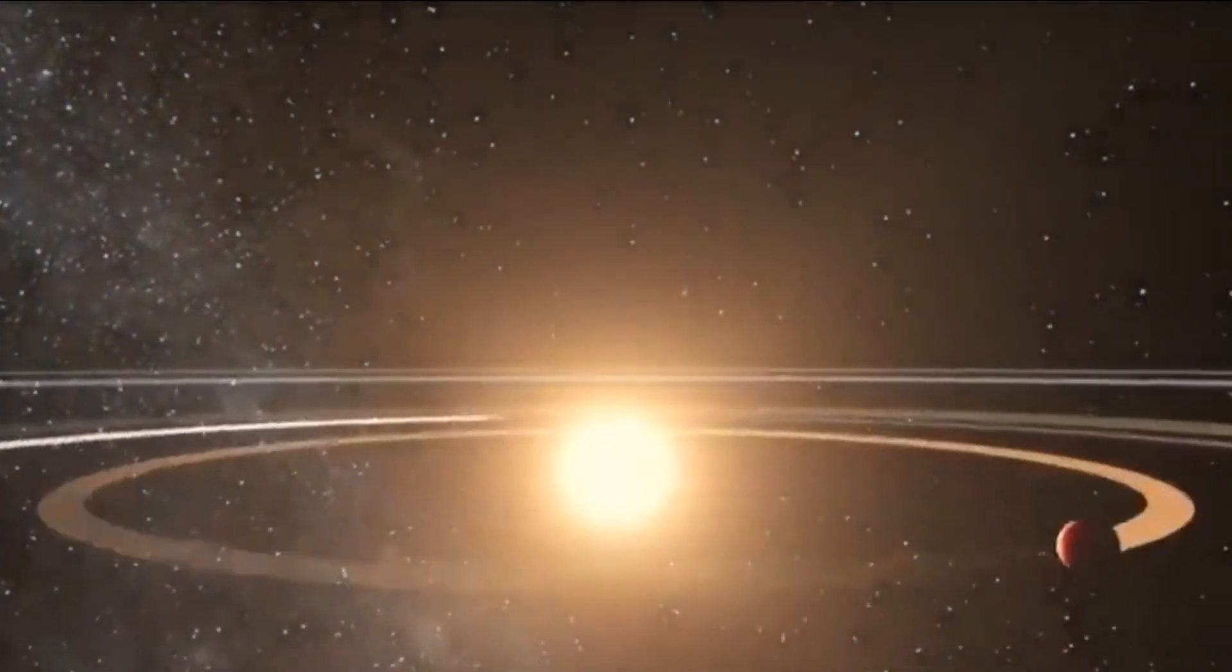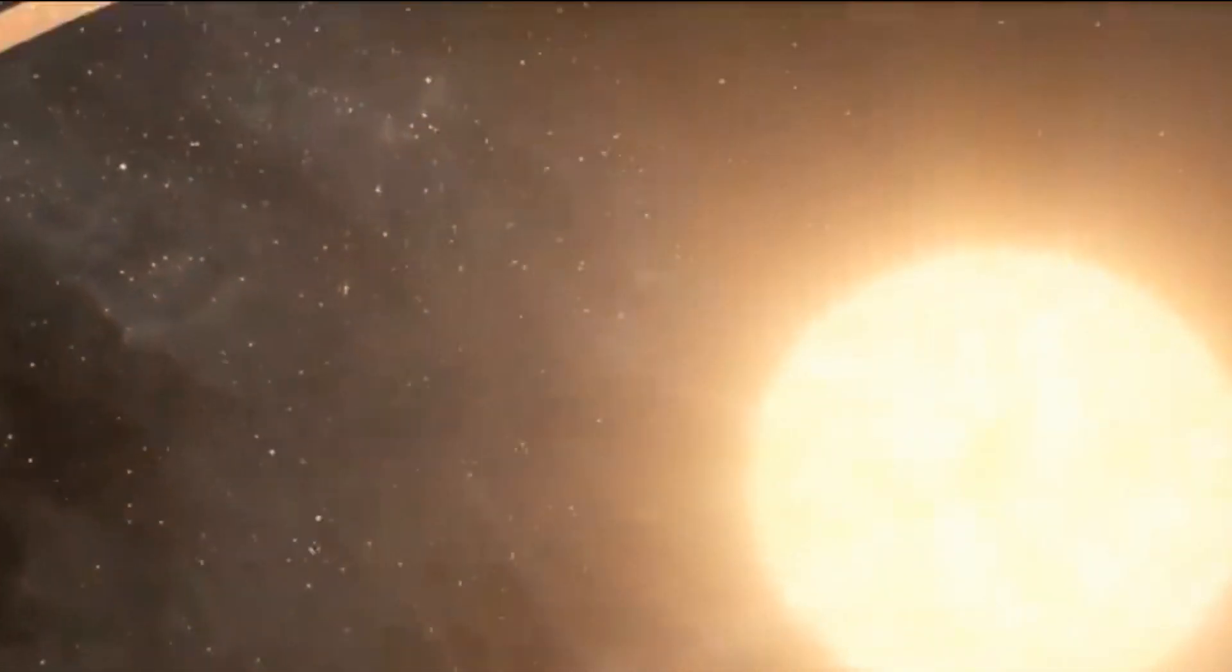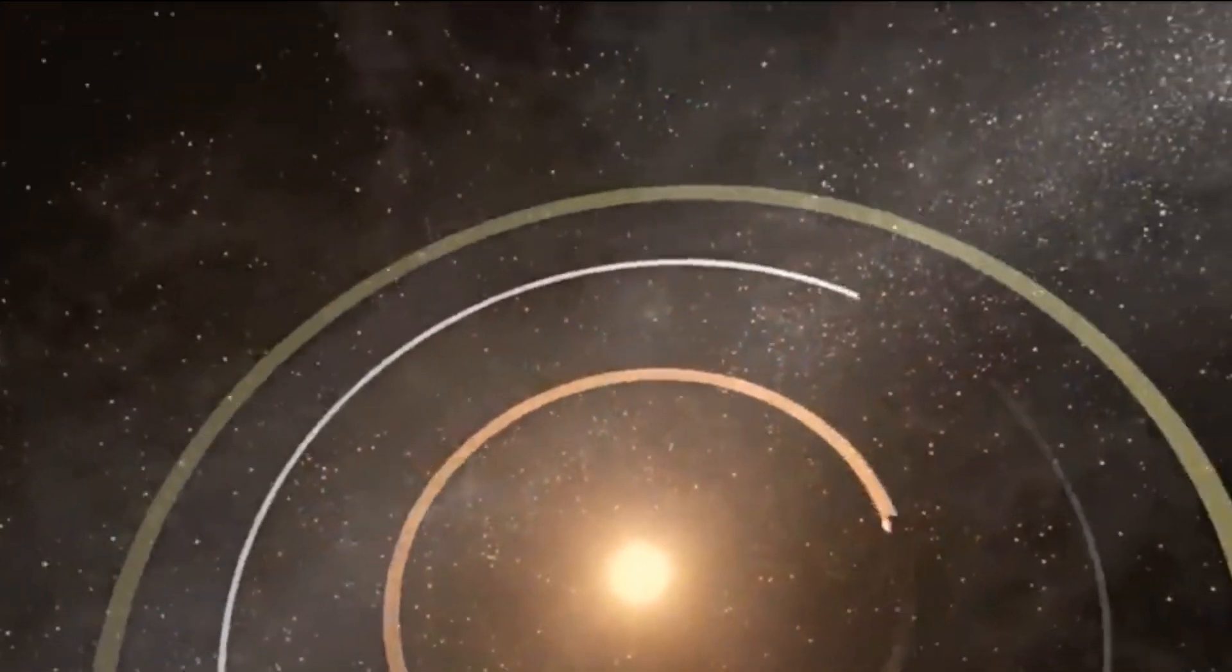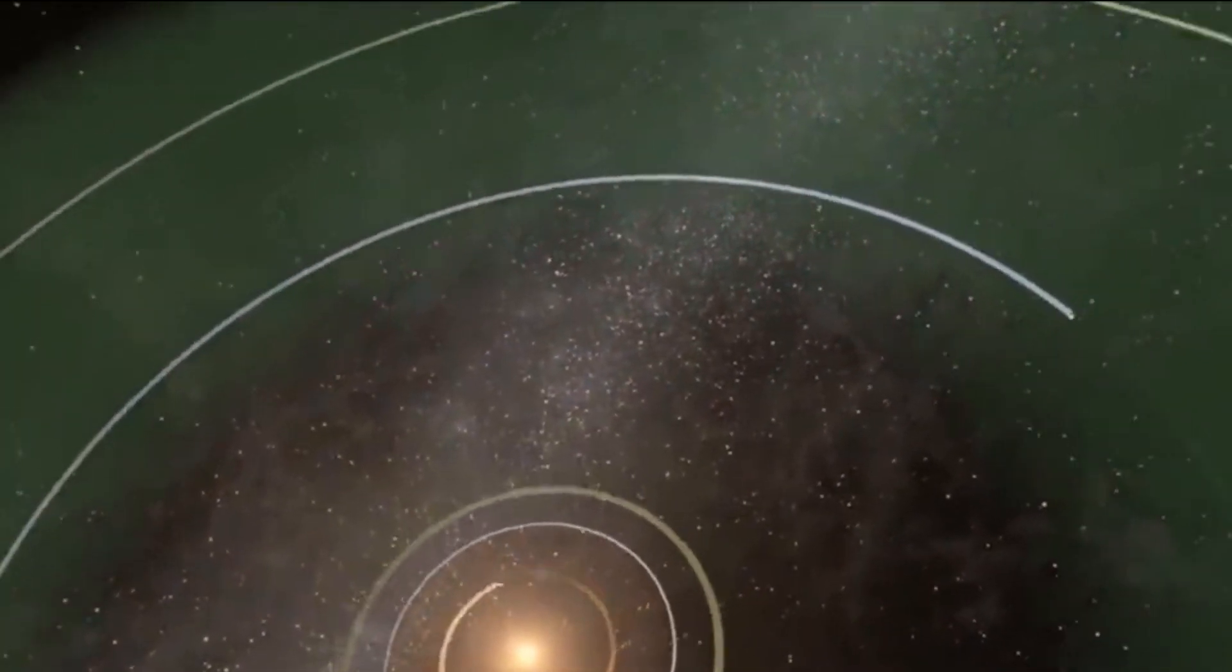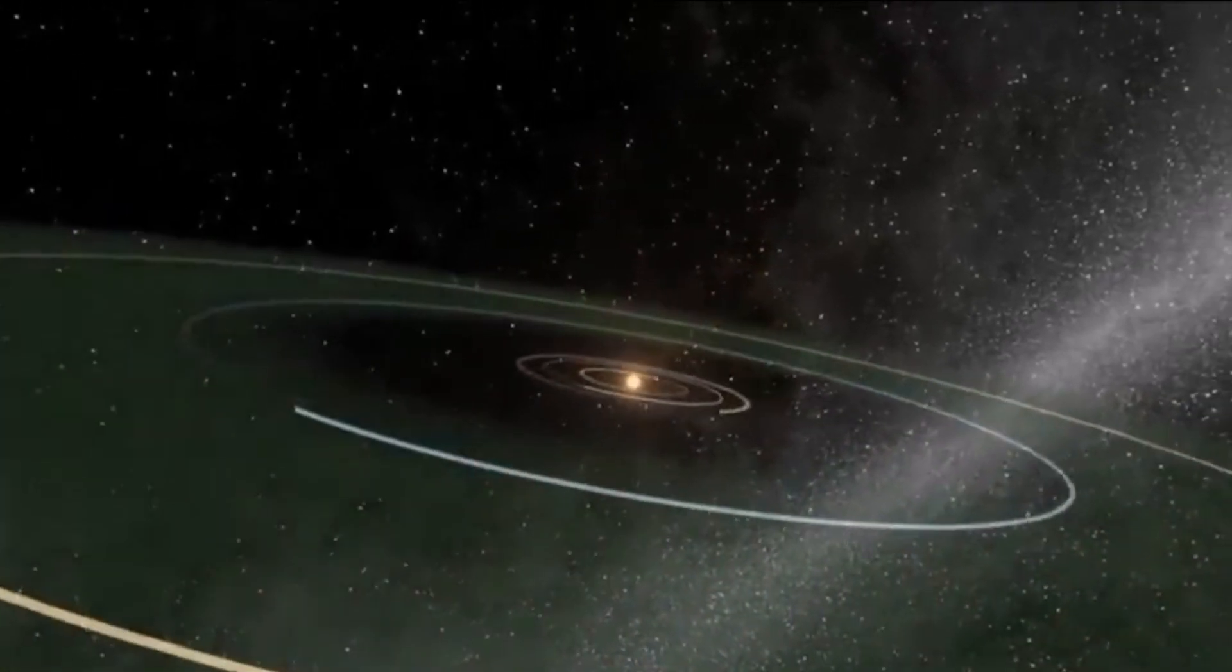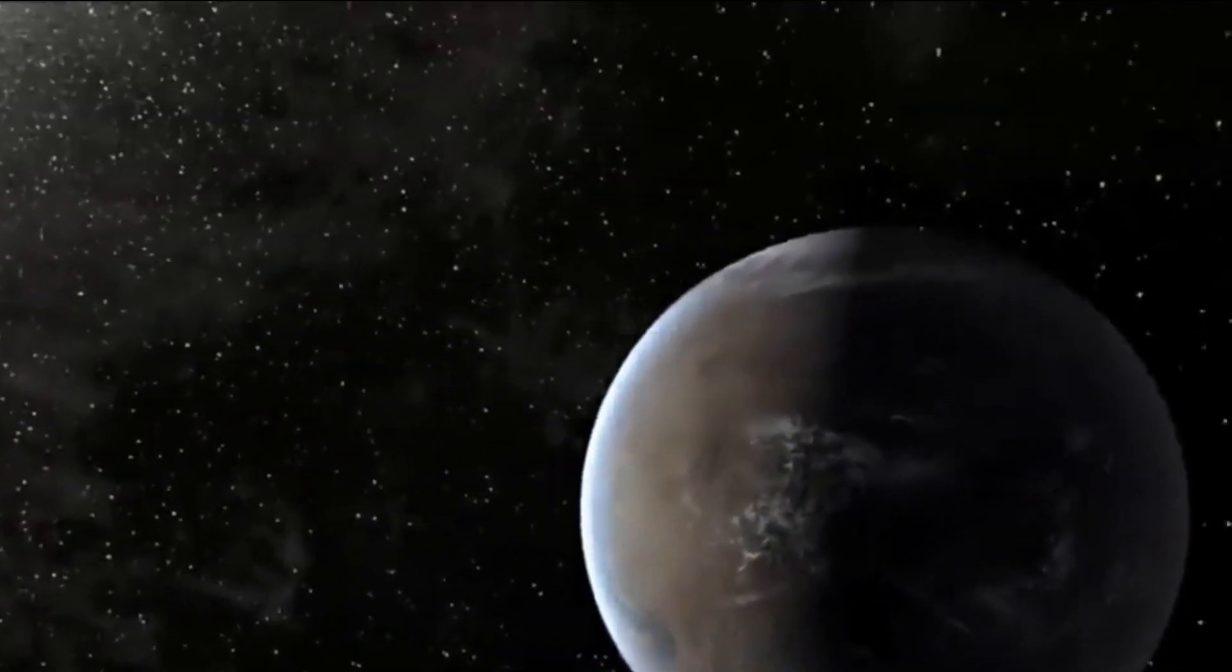Cette planète orbite dans la zone habitable et a un rayon et une masse très similaires à la Terre. Selon les astronomes, cette planète est la plus susceptible d'être habitable. La température de surface de Teagarden b est de 28 degrés Celsius et a probablement des océans d'eau en surface.